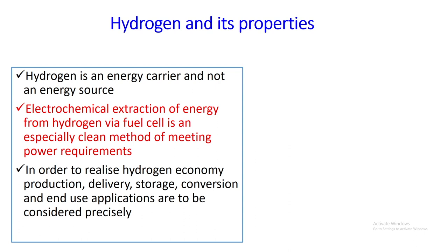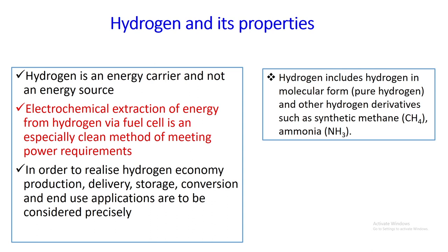In order to realize hydrogen economy, production, delivery, storage, conversion and end-use applications are to be considered very precisely. Hydrogen includes hydrogen in pure form or in molecular form, and other hydrogen derived from synthetic methane or maybe ammonia. This hydrogen is odorless and colorless gas and it has the simplest and lightest atom with one proton and one electron, and its molecular weight is 2.016.